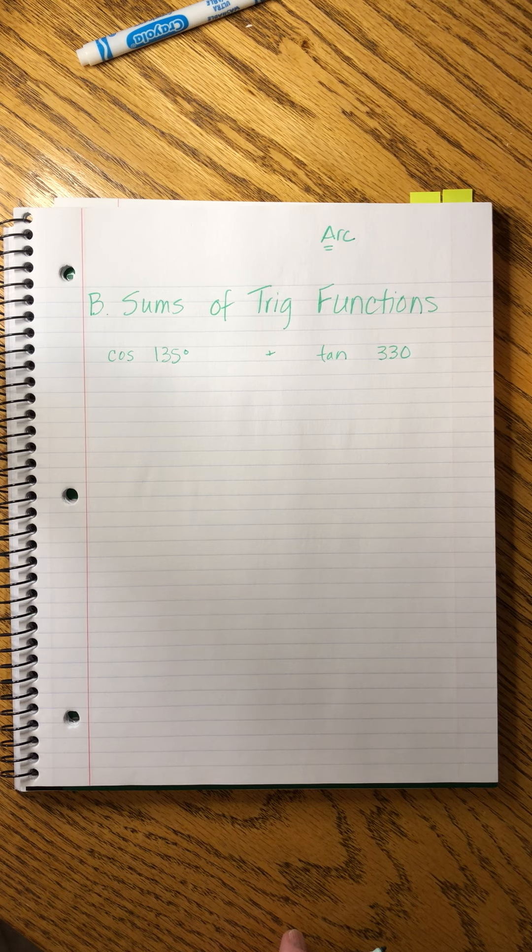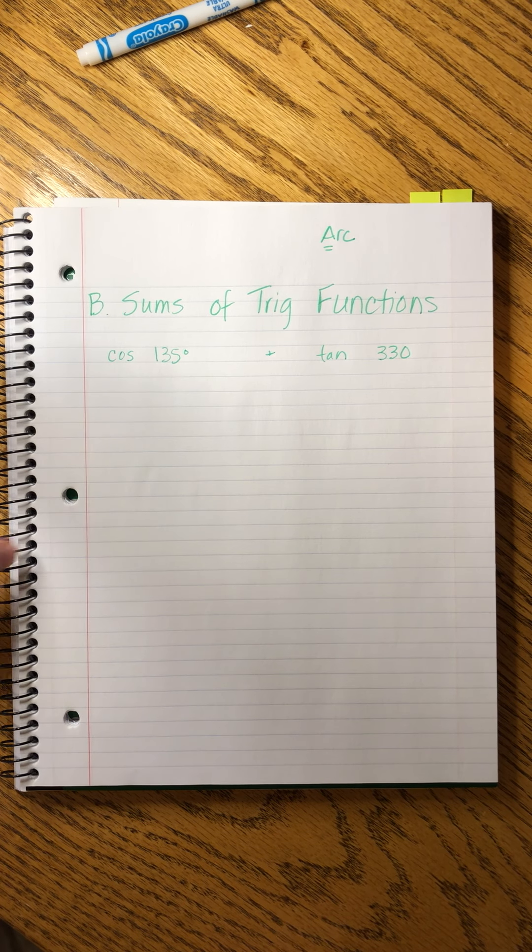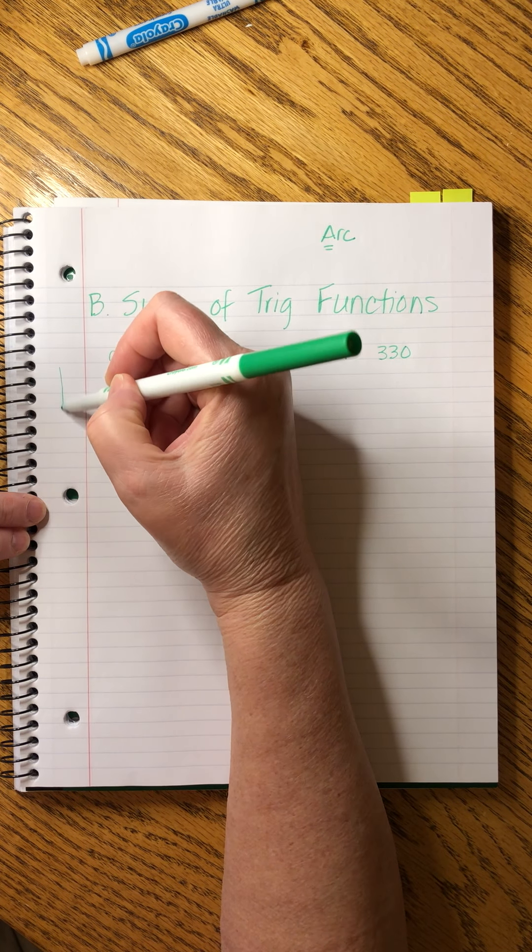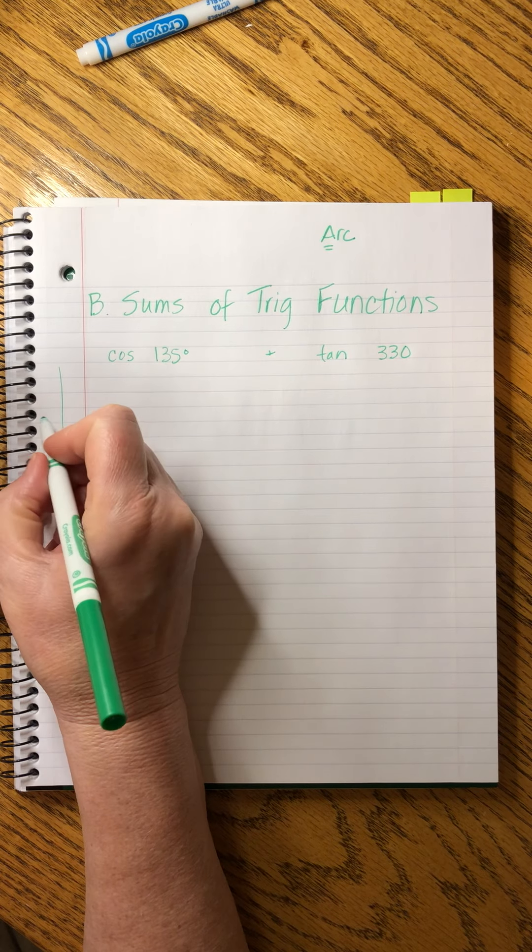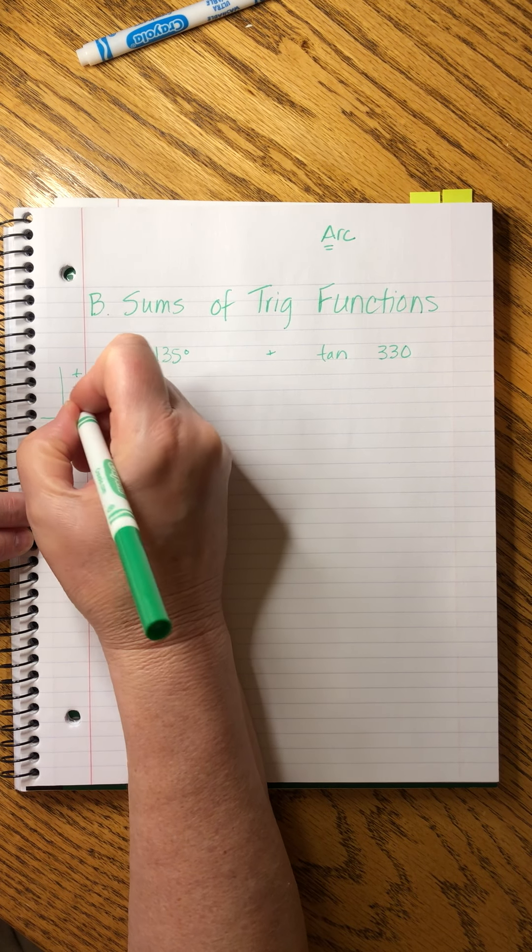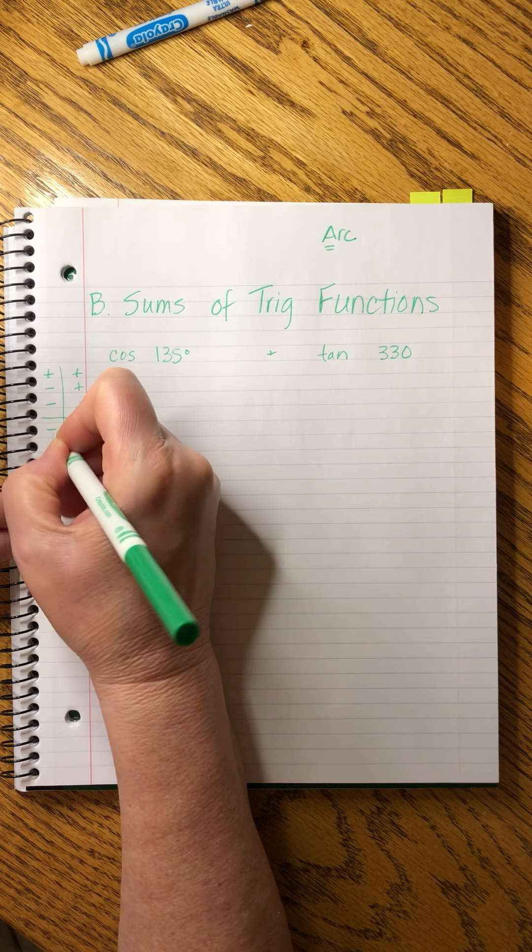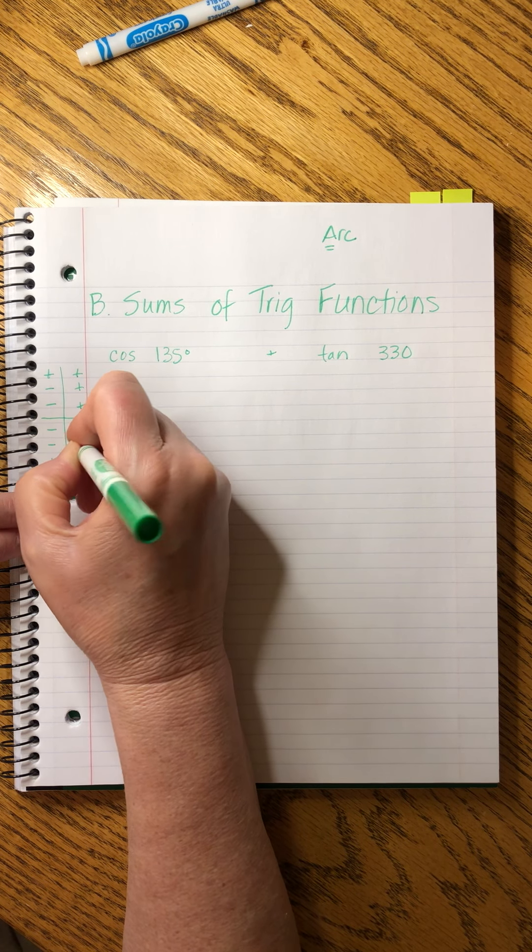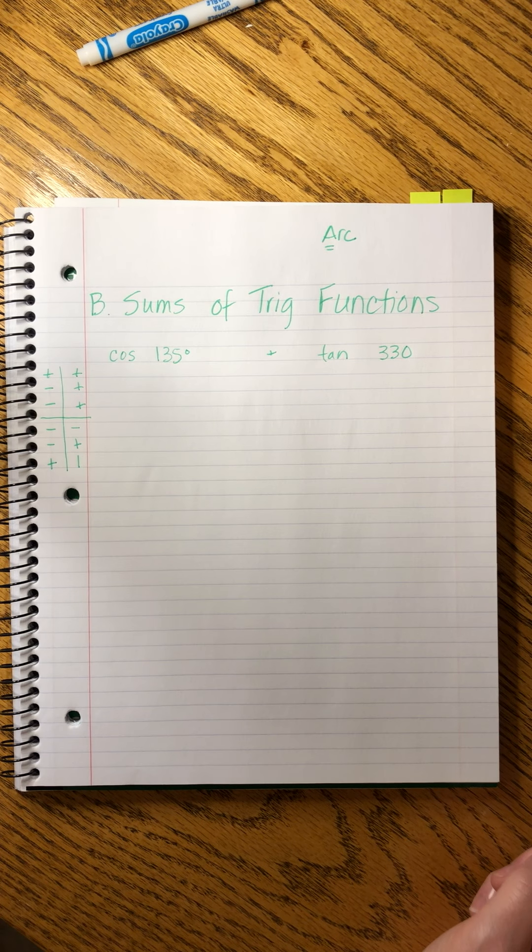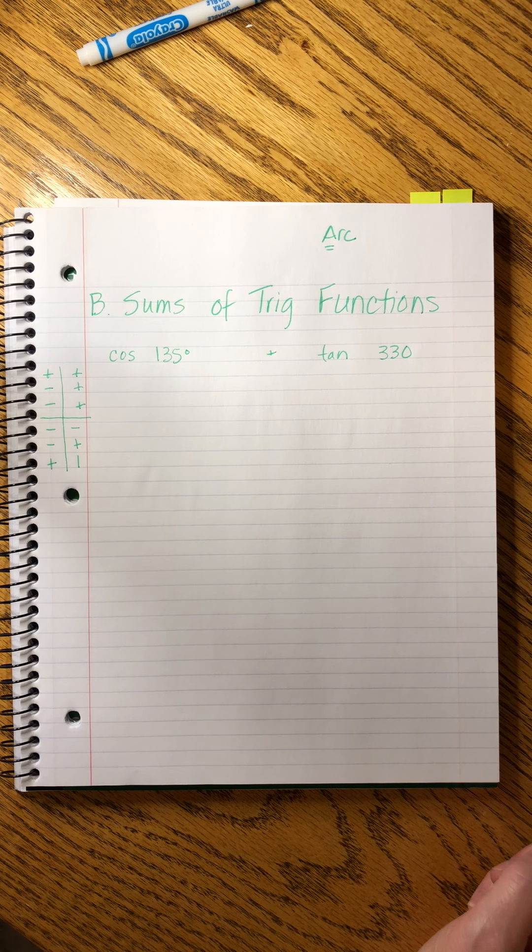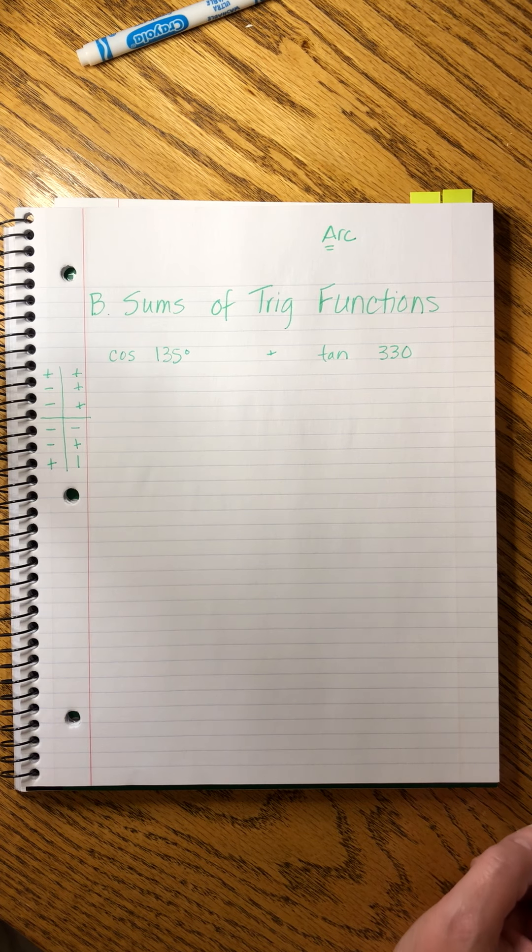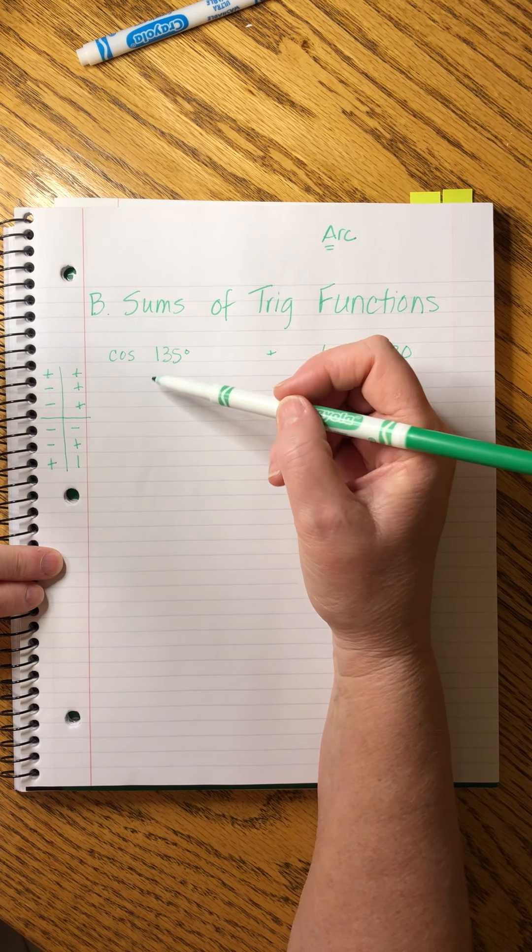The first thing that I'm going to do is I'm going to list my table of the trig signs. And I might need my quadrantal values, but I'm going to hold off on that until I'm sure I need them.